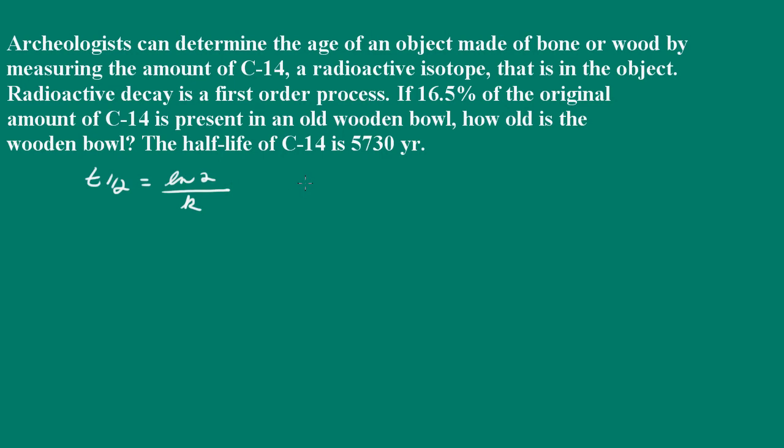And we can go ahead then and solve for k here. So k is equal to the natural log of 2 over the 5,730 years. And that is going to give us 1.20968 times 10 to the negative 4, and then that's per year.